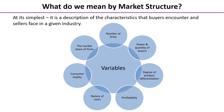Businesses are concerned about profitability, and market structure determines the profit margin they can earn over and above costs — later you'll learn to show this using graphs. Related to this is the nature of costs, which will be covered in detail later. Then there's consumer loyalty: do consumers prefer one producer strongly? And finally, market share — measuring the size of each competitor in the market.